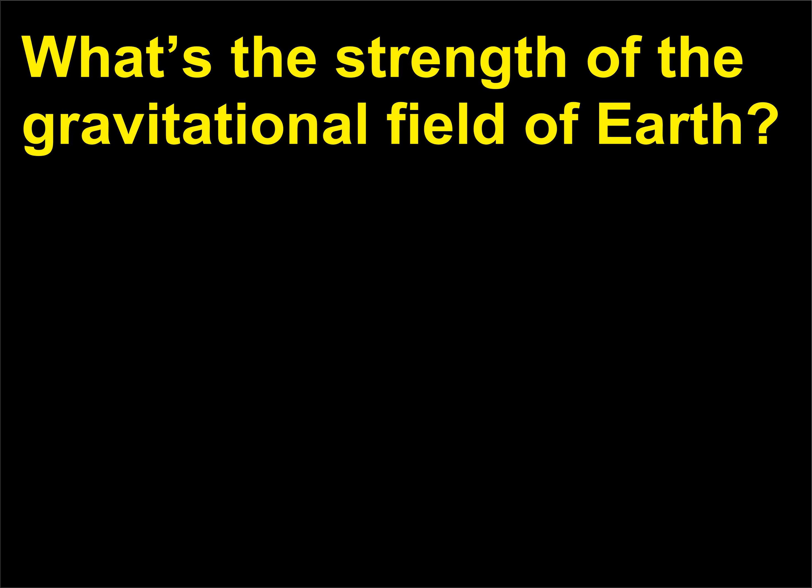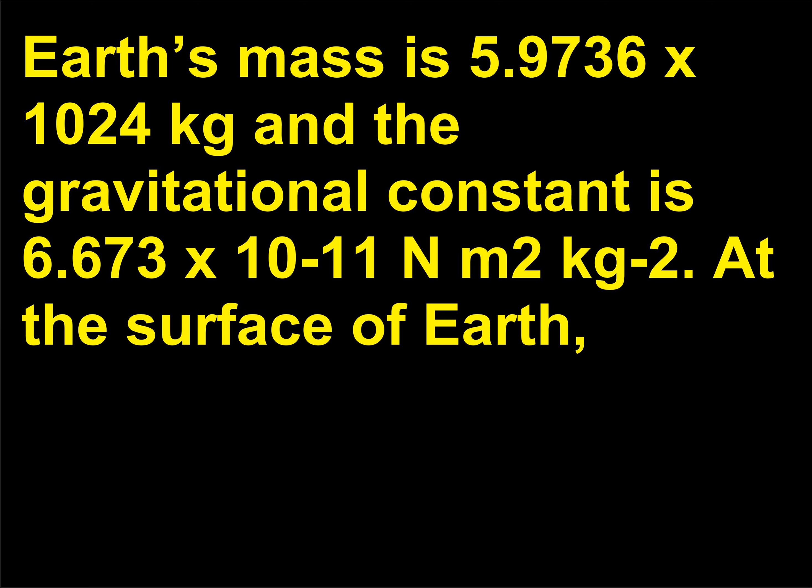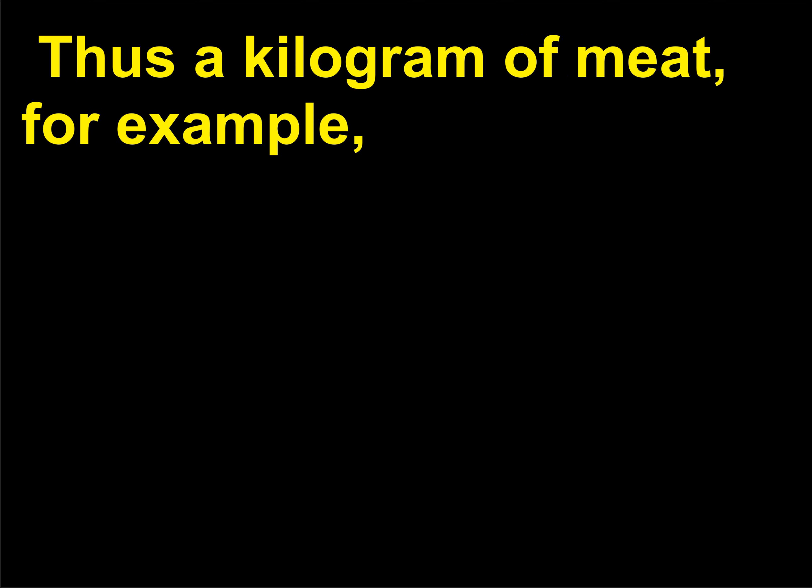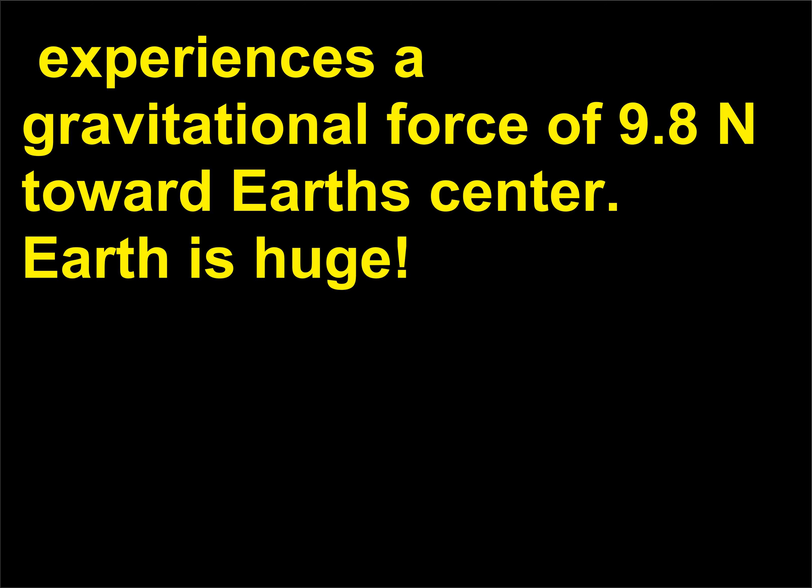What's the strength of the gravitational field of Earth? Earth's mass is 5.9736 × 10²⁴ kg and the gravitational constant is 6.673 × 10⁻¹¹ N·m²/kg². At the surface of Earth, 6.4 × 10⁶ m from the center, g equals 9.8 N/kg. Thus a kilogram of meat, for example, experiences a gravitational force of 9.8 N toward Earth's center.